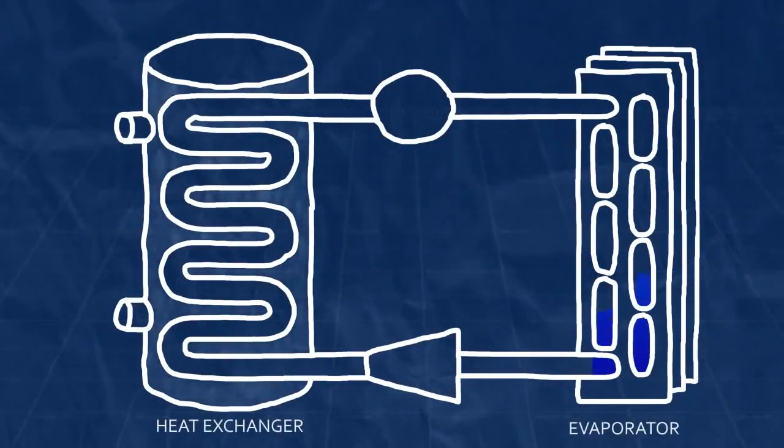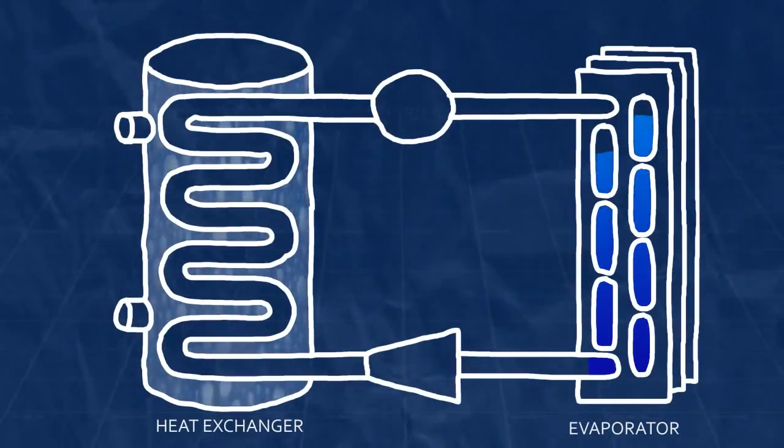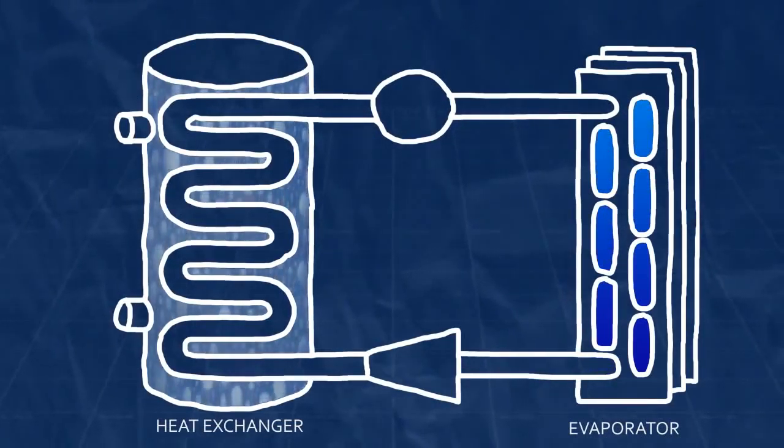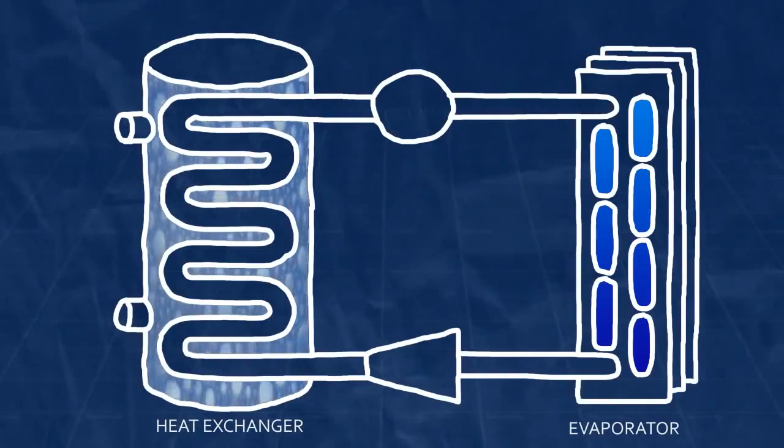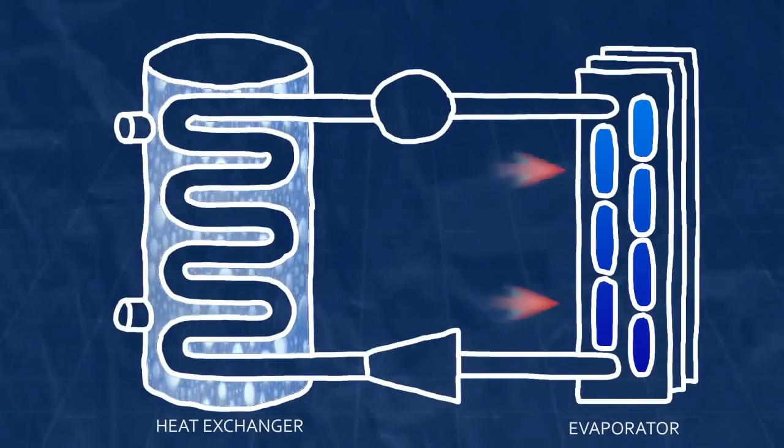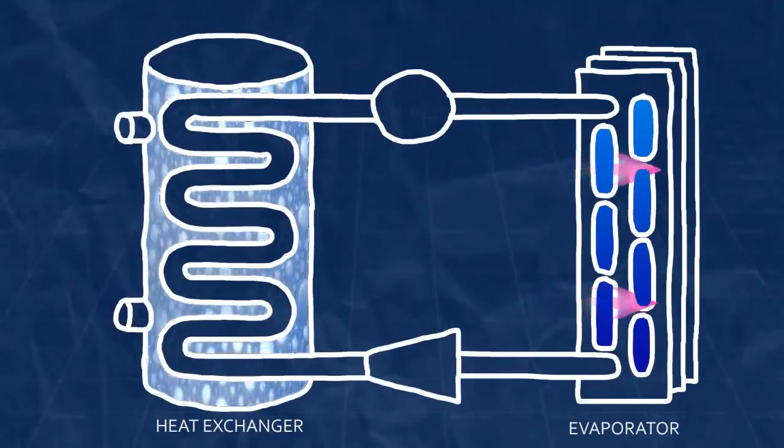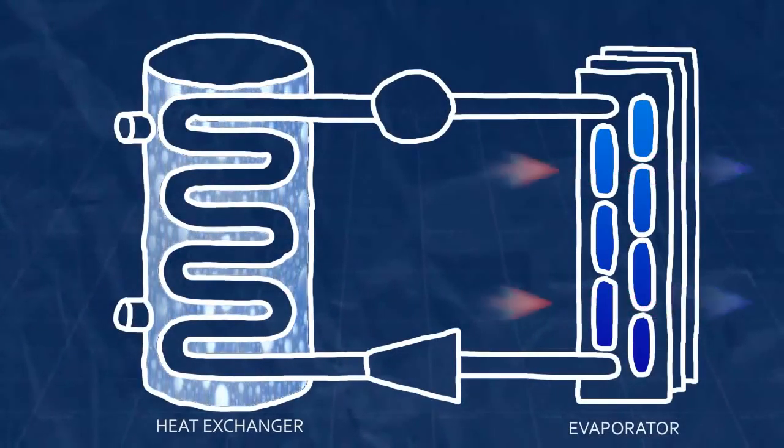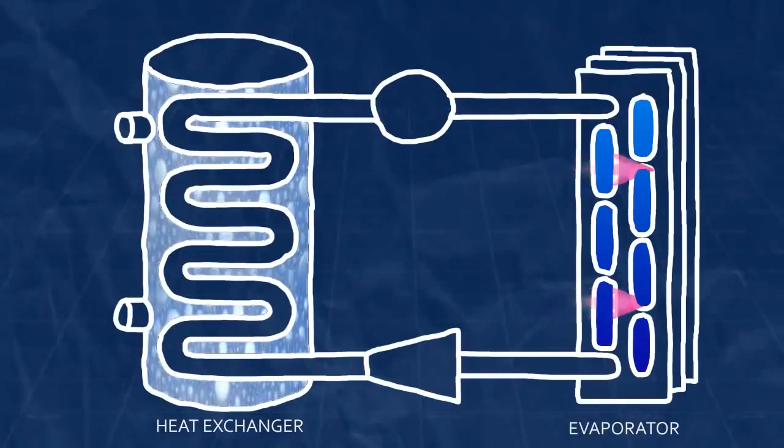In the beginning of a cycle, the refrigerant is in a cold, low-pressure, liquid gaseous state flowing through tubes that are exposed to room air. It is colder than the room air, so the heat in the air moves to the refrigerant. This is because heat always wants to move from warmer things to cooler things.